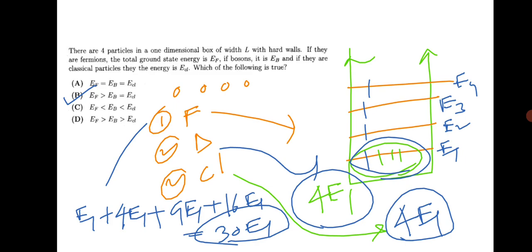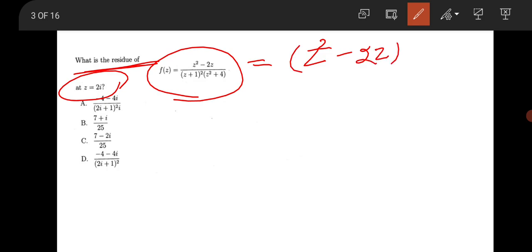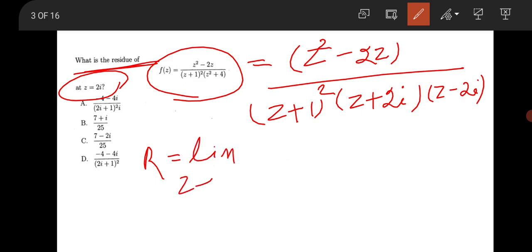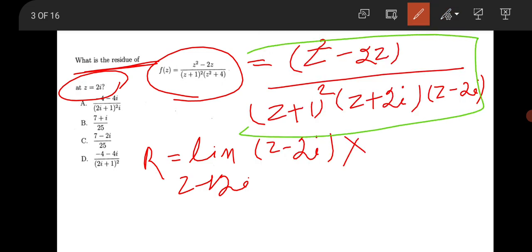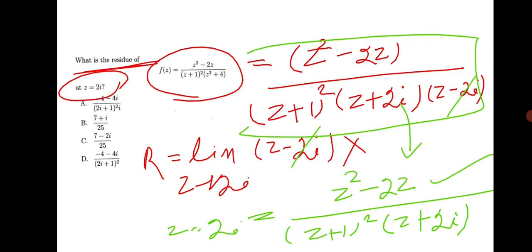The next question is from complex analysis — find the residue of the function [z² - 2z] / [(z+1)² · z² · (z+2i) · (z-2i)] at z = 2i. To calculate the residue, take the limit as z → 2i of (z - 2i) times the function. The (z - 2i) term cancels, leaving [z² - 2z] / [(z+1)² · z² · (z+2i)]. Substituting z = 2i gives the answer.